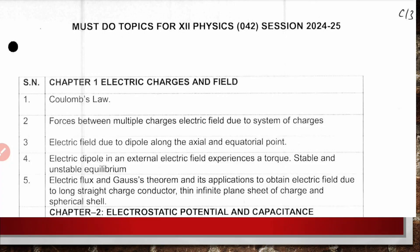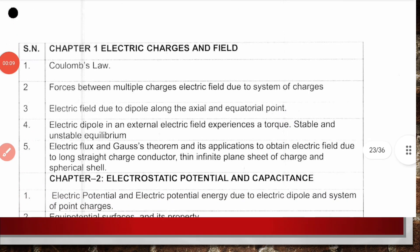Now let us see must do topics for class 12th physics session 24-25. Chapter 1, Electric Charges and Field, has five major topics: Coulomb's law and forces between multiple charges, electric field due to system of charges, electric field due to dipole along axial and equatorial point, electric dipole in an external electric field experiencing torque with stable and unstable equilibrium, and electric flux and Gauss theorem with applications to obtain electric field due to long straight charged conductor, thin infinite plane sheet of charge, and spherical shell.